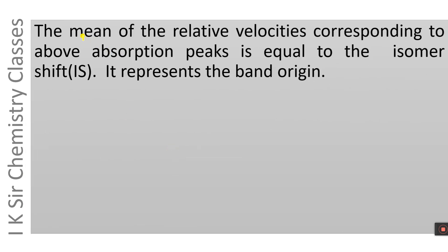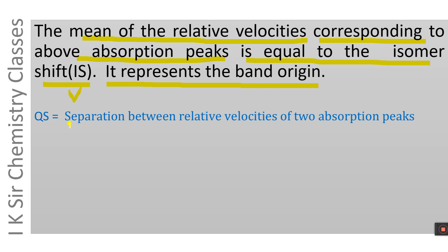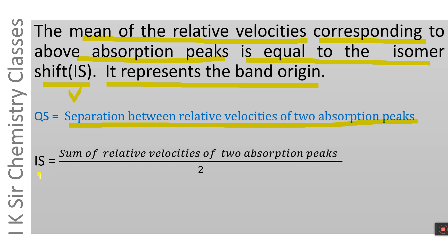On the other hand, the mean of the relative velocities corresponding to the two absorption peaks is equal to the isomer shift. Quadrupole splitting equals the separation between the relative velocities of two absorption peaks, while the isomer shift equals the sum of the relative velocities of two absorption peaks divided by two — that is, their mean, representing the band origin.